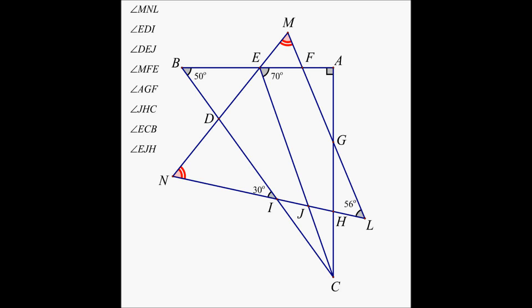What we have here is a two-dimensional picture of two overlapping triangles and some of the angles are labeled: this one is labeled 56, this one is labeled 30, this is labeled 50, this is labeled 70, and these two angles are congruent.